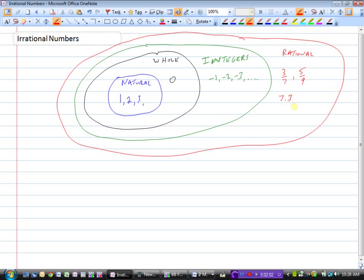Like 7.3, and decimals that can go on forever, like 4.111111... as long as they're repeating, or 3.626262... So those are all rational numbers.